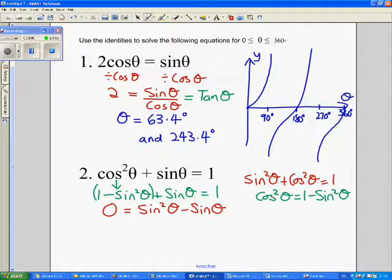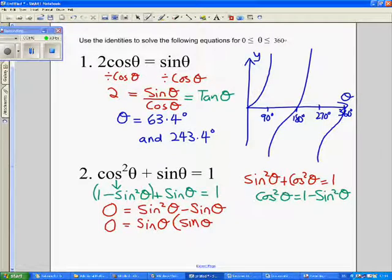We can now take out the common factor, which is sin θ. And that will leave us with sin θ, because sin θ times sin θ is sin² θ, and sin θ times 1 is sin θ.